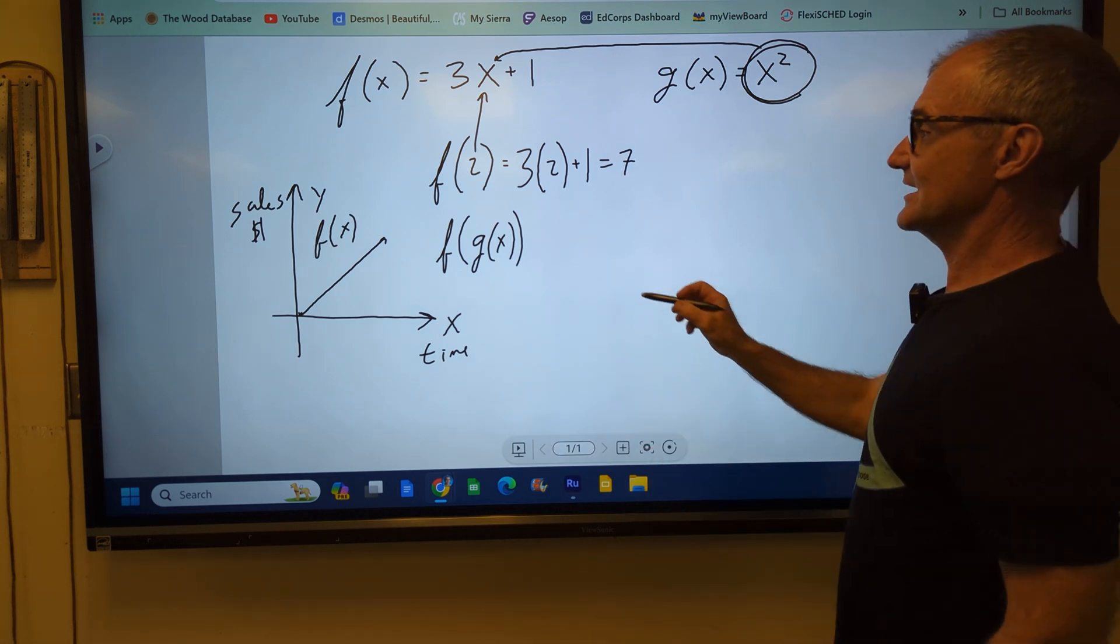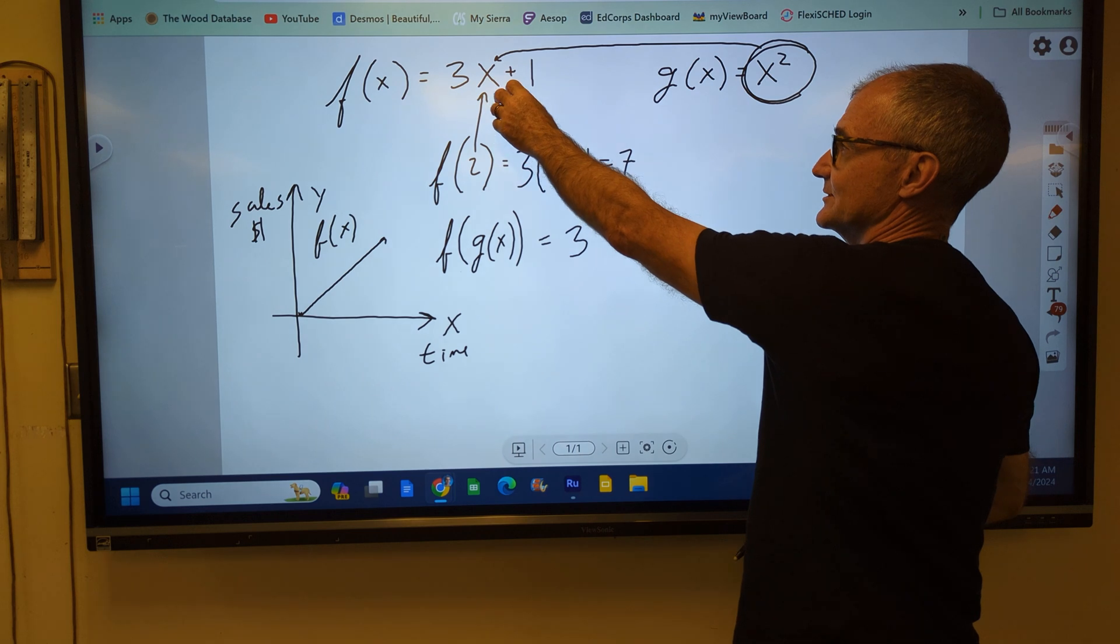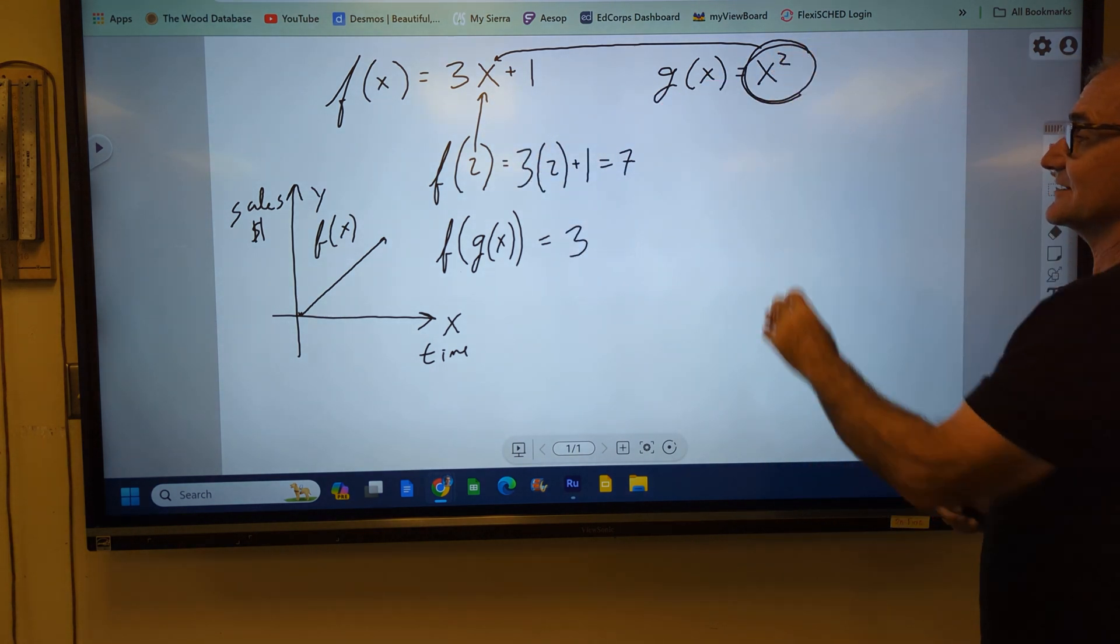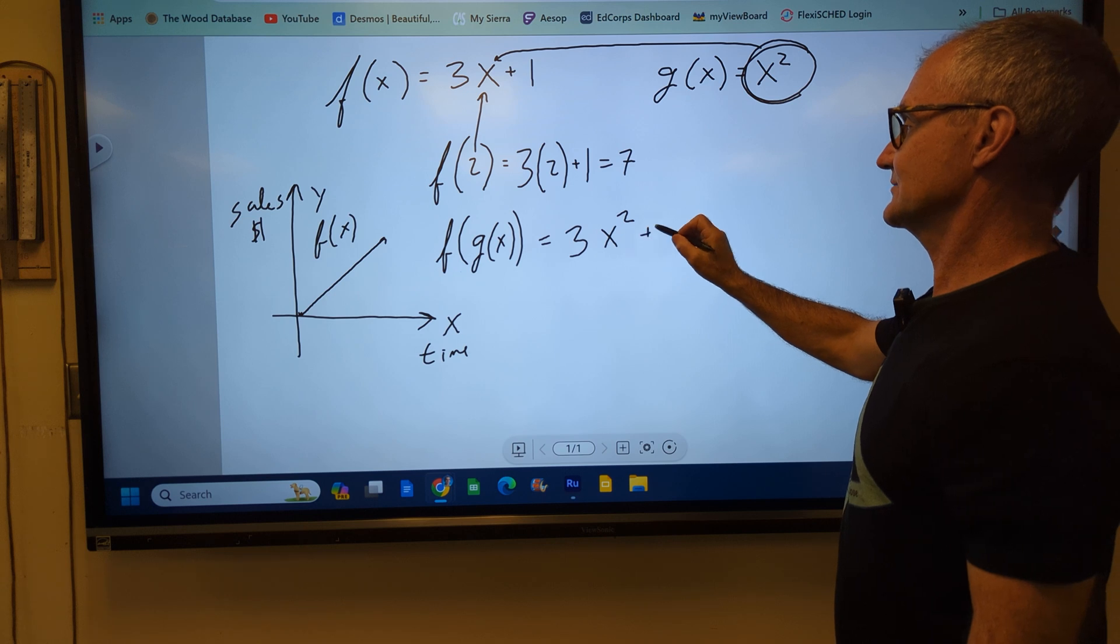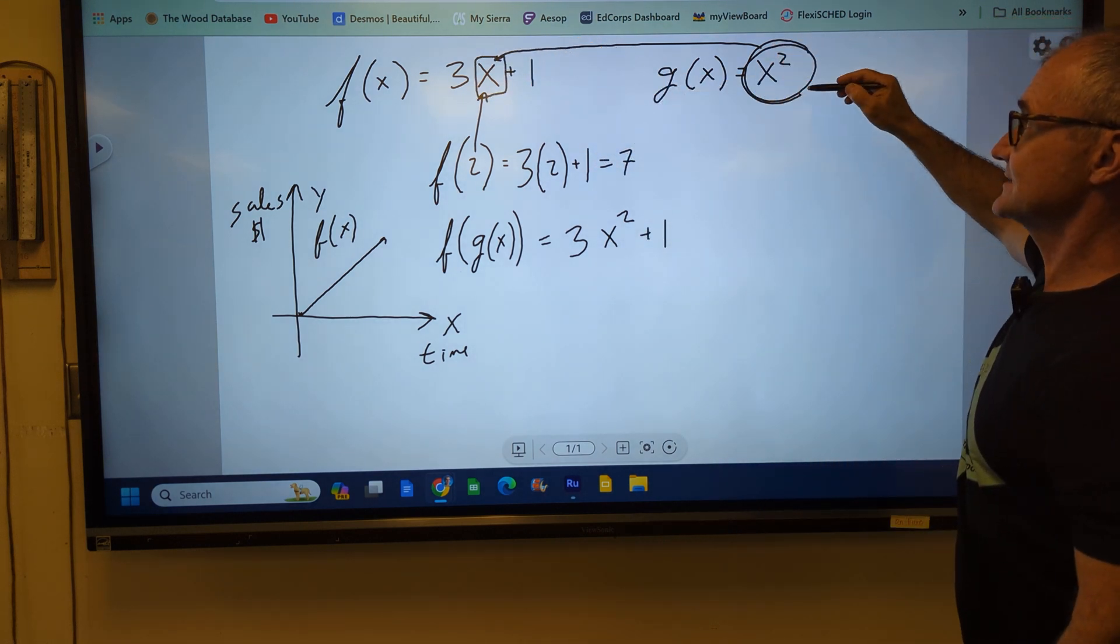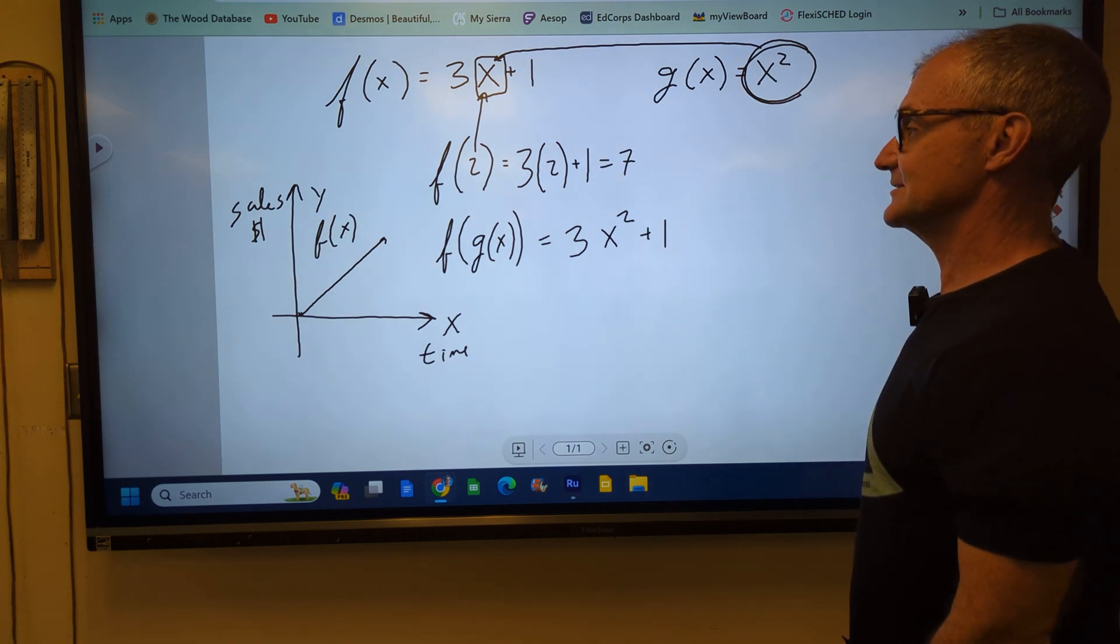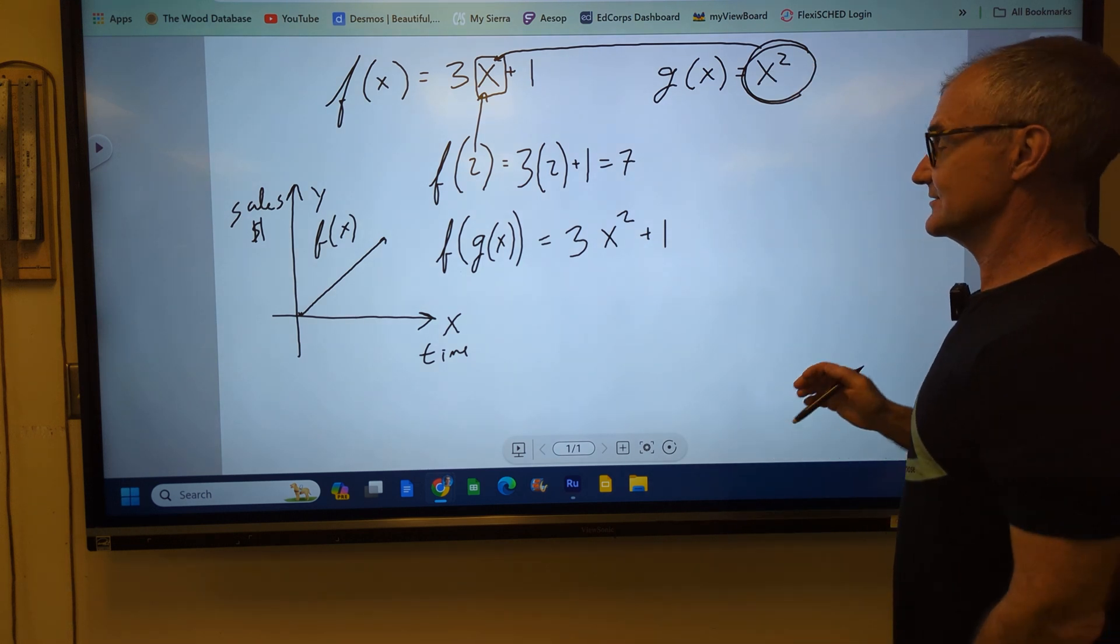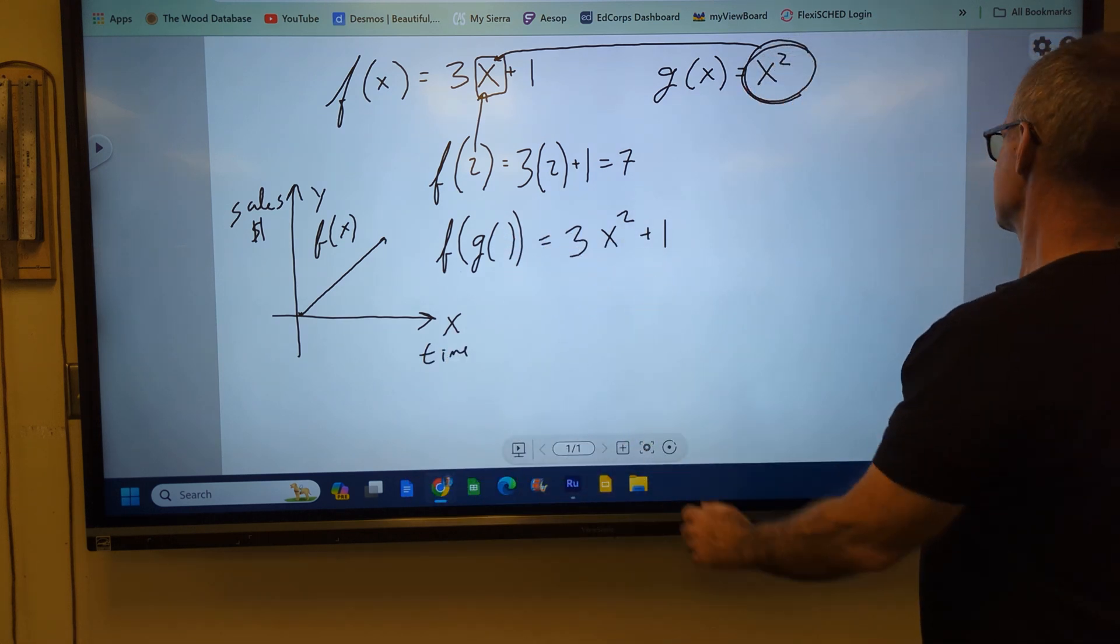So f of g of x is 3 times my independent variable x. Well, my independent variable x is now this function, x squared plus 1. So I replace this independent variable x with my new function x squared right there. And that's as simplified as you could get. On the other hand, it said something different. So f of g of x is that.